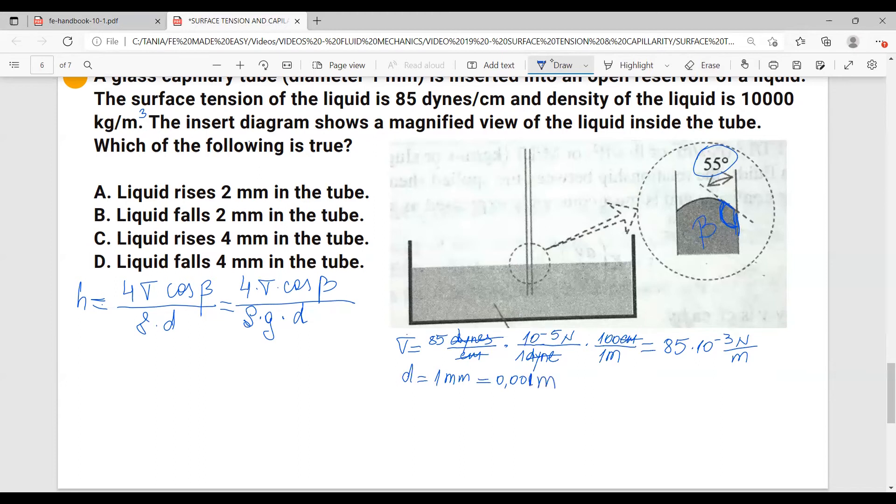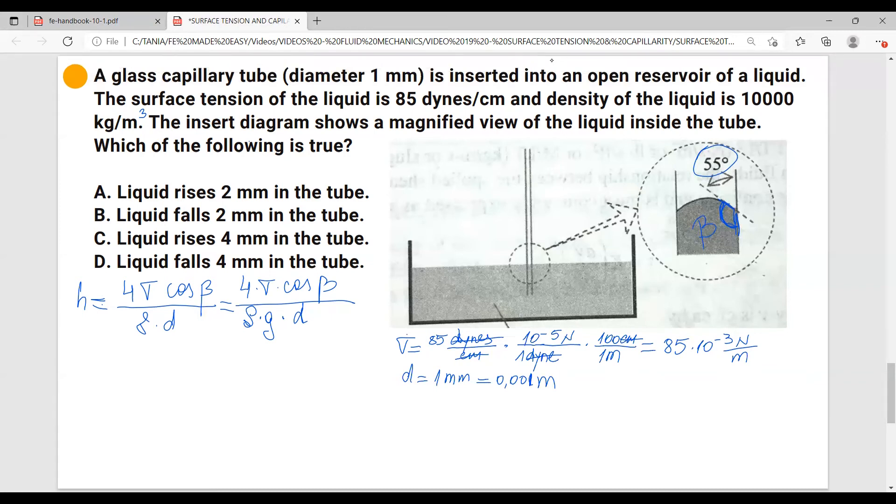Now we have diameter given as 1 millimeter, and that equals 0.001 meters. What else do we have? Cosine of beta is, we've talked about it, this angle here. We have the density of the liquid given in kilograms over meter cubed. The gravity acceleration g equals to 9.81 meters over a second squared.